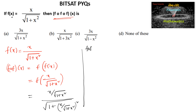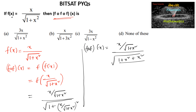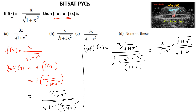So we get f circle f of x equal to x upon root of 1 plus x square divided by under root of 1 plus x square plus x square upon 1 plus x square, which equals x upon root of 1 plus x square into under root of 1 plus x square divided by under root of 1 plus 2x square. We may cancel root of 1 plus x square, so f circle f of x is equal to x upon root of 1 plus 2x square.